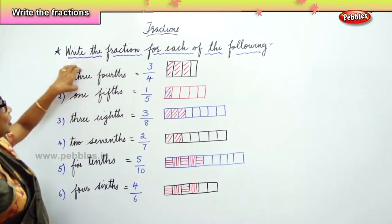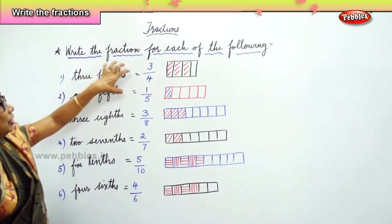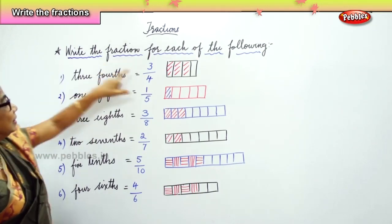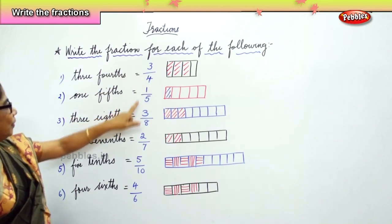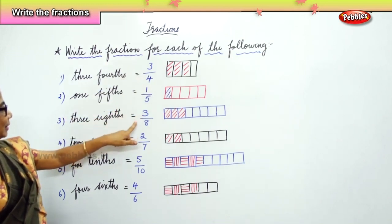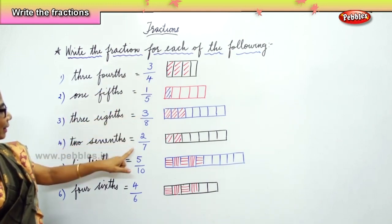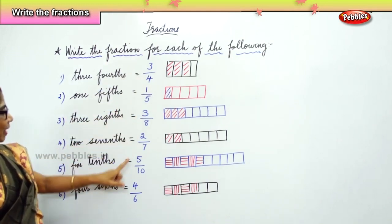We learned to write the fraction for each of these: three-fourths, one-fifth, three-eighths, two-seventh, five-tenth, and four-sixths. Thank you.